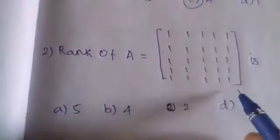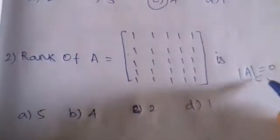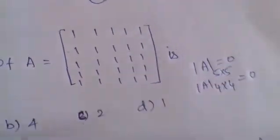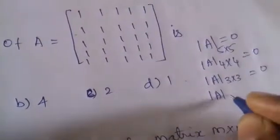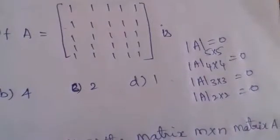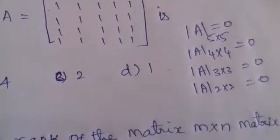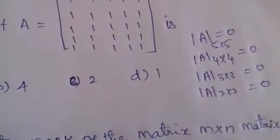Next, find the rank of matrix A. The determinant value of A is equal to 0. We check submatrices: the 4×4 determinant is 0, the 3×3 determinant is 0, and the 2×2 determinant — with entries like 1, −1, 1, −1 — is also 0. So the rank of the matrix is 1.